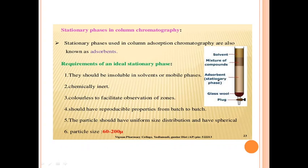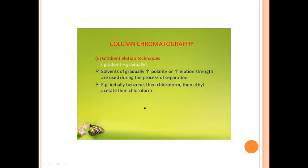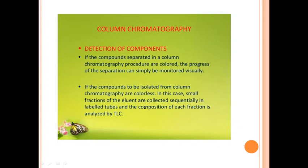The stationary phases in column chromatography are also known as adsorbents. They should be insoluble in solvents or mobile phases, chemically inert, and should have reproducible properties from batch to batch. The mixture should not dissolve or mix into the solvent.